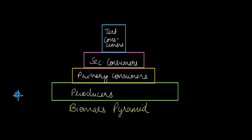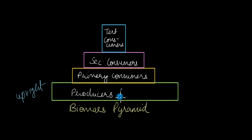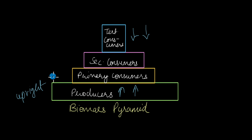This again is an upright pyramid because the base is much bigger than the top. We have this shape for the biomass pyramid because producers are more in number, which is why they have a higher biomass compared to tertiary consumers, which are fewer in number and therefore have much less biomass. As we go up each trophic level the biomass decreases because the number of individuals in the ecosystem is also decreasing.